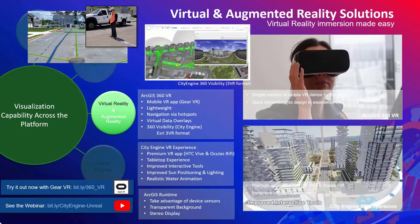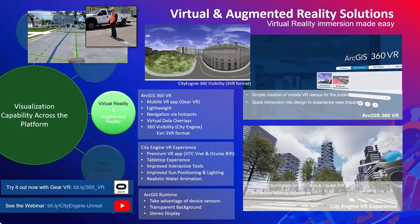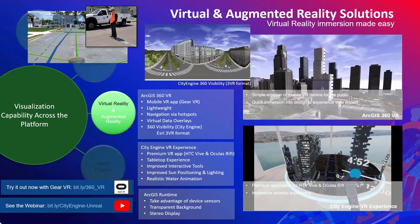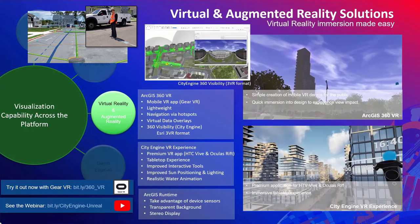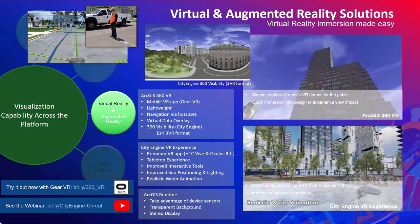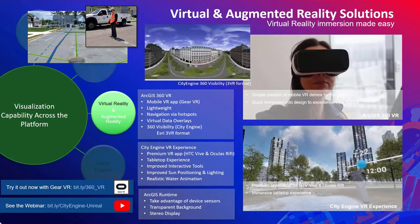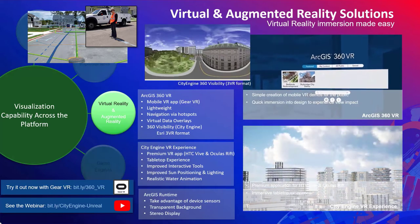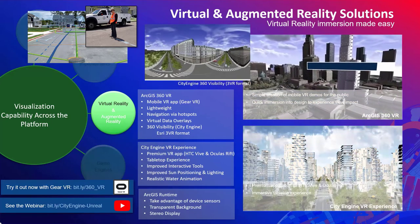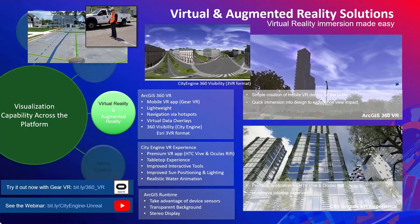In addition to game engine integration, there are further ways to create virtual and augmented reality solutions, such as ArcGIS 360 VR — a mobile VR app that's lightweight, lets you author hotspot navigation, and creates 360-degree visibility. CityEngine VR is a premium VR app for HTC Vive and Oculus Rift. It creates a tabletop experience through templates and has improved interactive tools, sun positioning and lighting, and realistic water animation. ArcGIS Runtime also takes advantage of device sensors, transparent background, and stereo display.